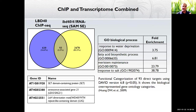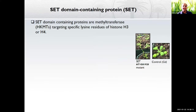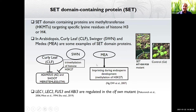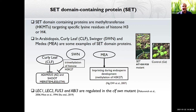We focused on three candidate targets potentially involved in embryogenesis. The first is a SET domain-containing protein involved in methyltransferase activity, targeting specific lysine residues for histone H3. The mutant line shows curly leaves and early flowering. Well-known SET domain proteins like Curly Leaf, Swinger, and MEA have been shown directly or indirectly involved in embryogenesis. LEC1, LEC2, FUSCA3, and ABI3 — the key embryo identity genes — show regulation in the SET domain mutant line.